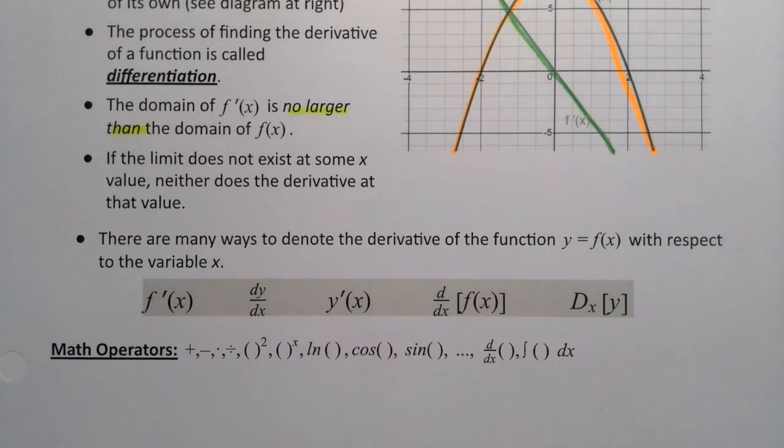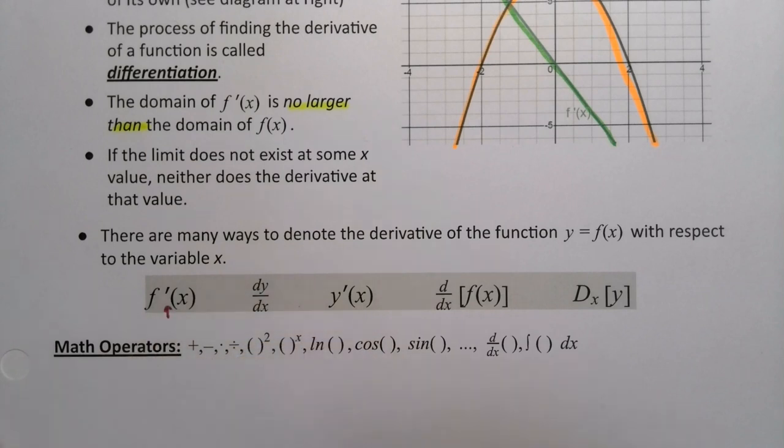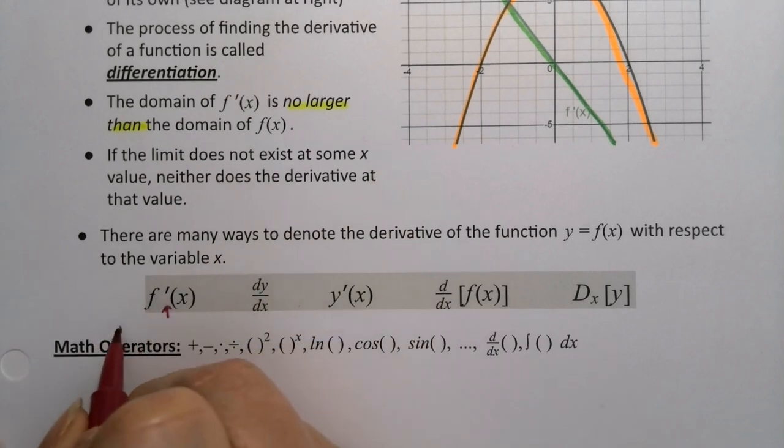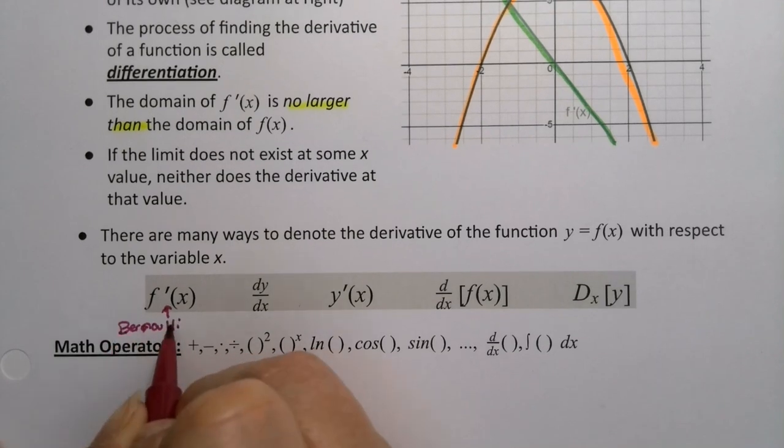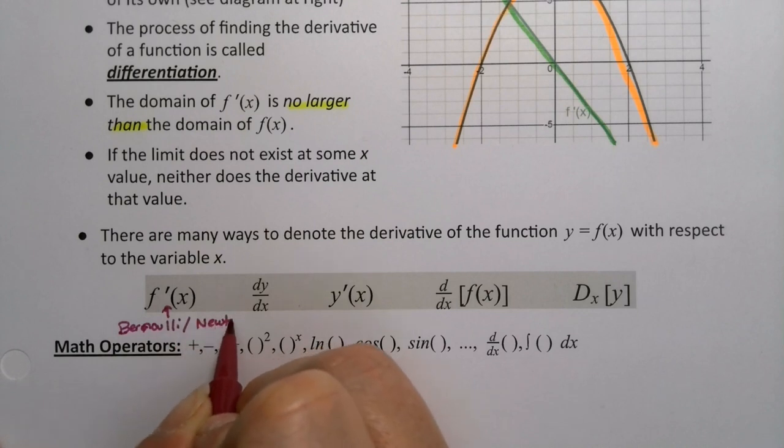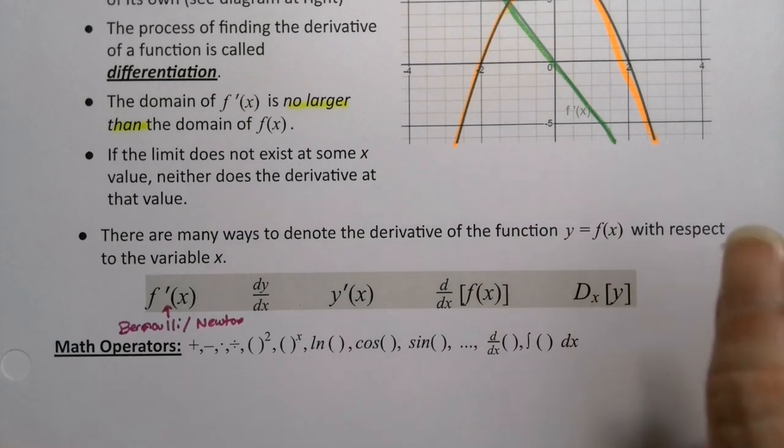Now there are a lot of ways to notate or denote the derivative. One of which is probably the one you've seen the most often, which is the Bernoulli notation, which he stole from Newton. Isaac Newton of course being one of the people that invented calculus. Isaac Newton did everything with dots and Bernoulli saw that and he didn't quite like it.